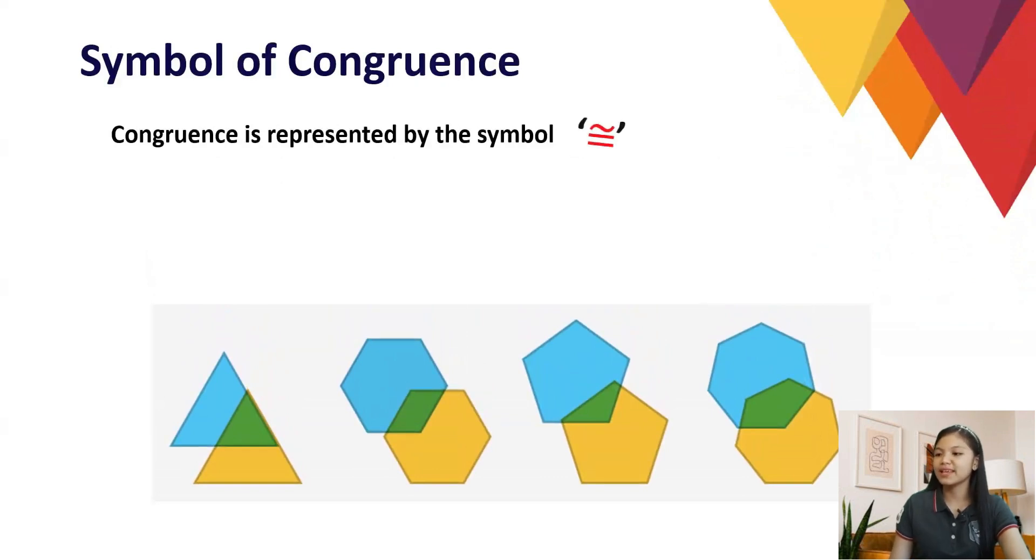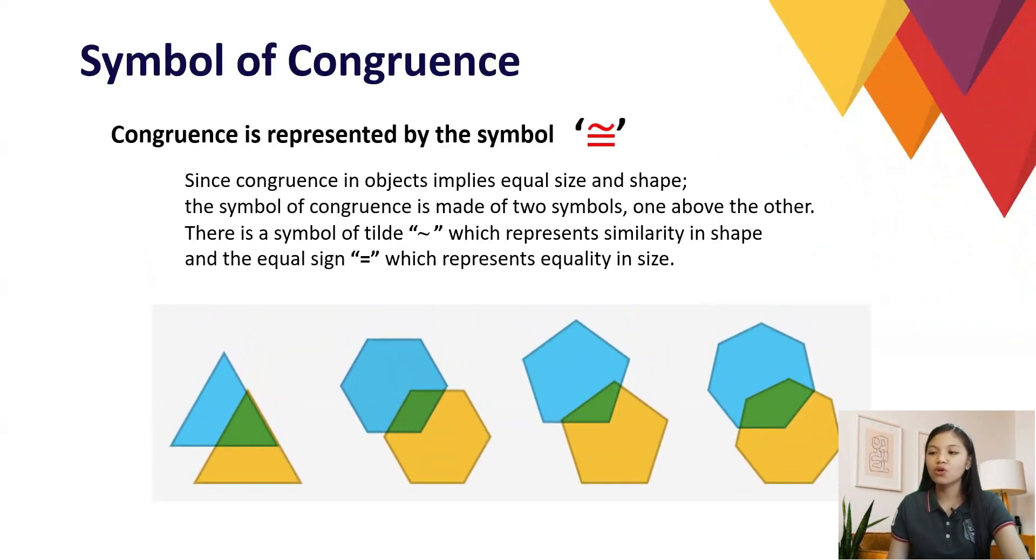Congruence is represented by this symbol. Since congruence in objects implies equal size and shape, the symbol of congruence is made of two symbols, one above the other. There is a symbol of tilde, which represents similarity in shape, and the equal sign, which represents equality in size.